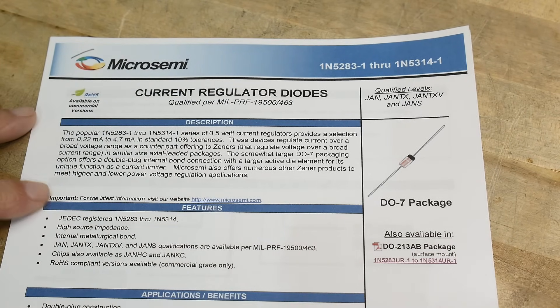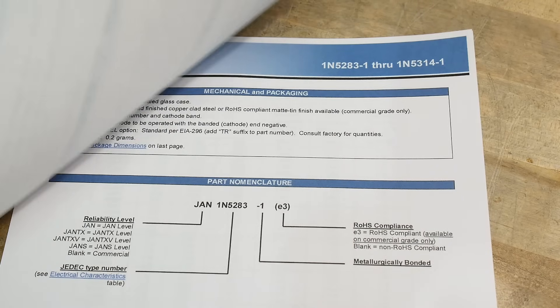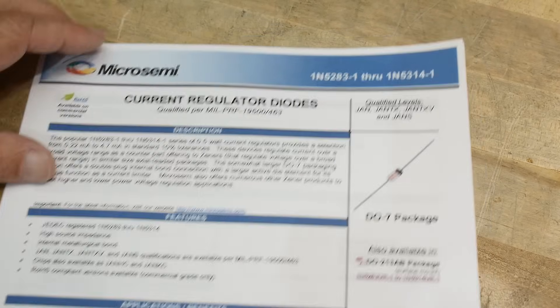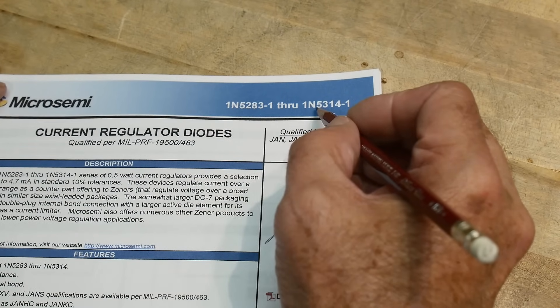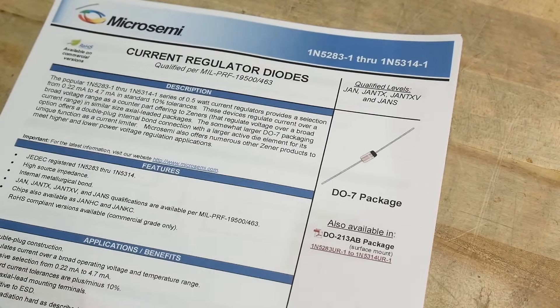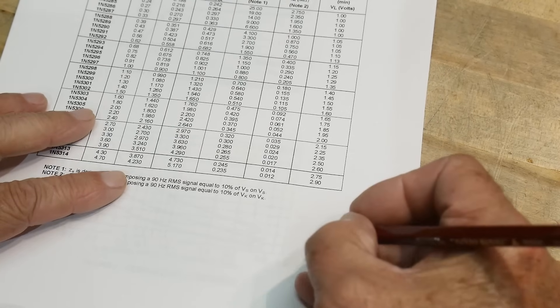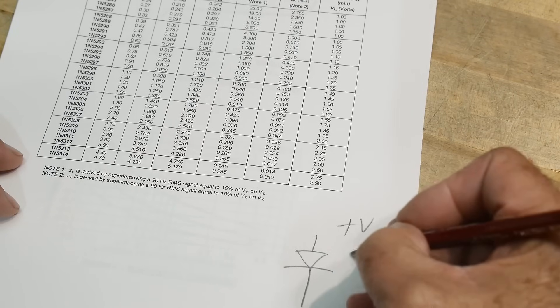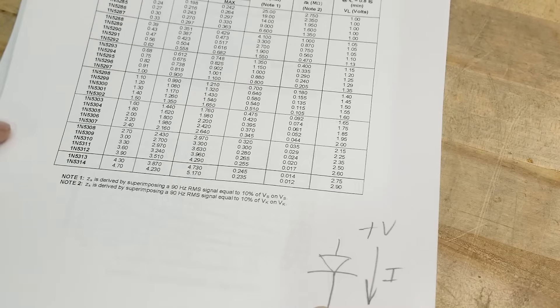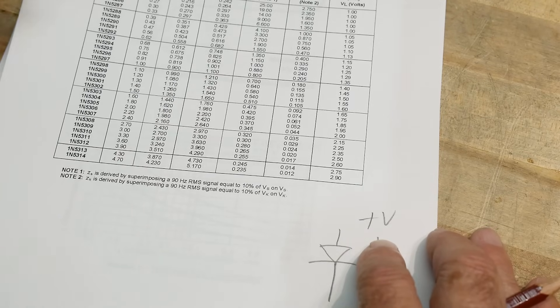These are kind of a strange beast and they look like a diode but have very strange characteristics. This particular group of diodes are 1N5283 all the way up to 5314 and they are various currents. What is a current regulator diode? Well, it's a regular diode, and if you put in a voltage you will end up with some current through the diode. Current is constant regardless of what voltage you have.